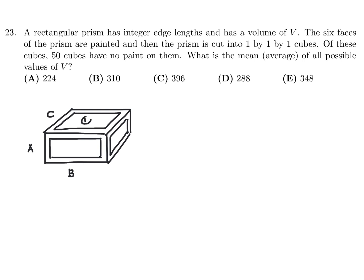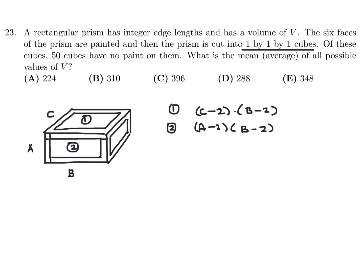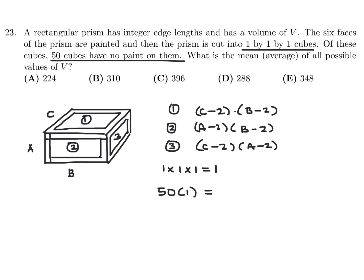So that dimension would be C minus 2. Region 1 would be C minus 2 times B minus 2. Region 2 would be A minus 2 times B minus 2, because you're subtracting one from each side. Region 3 would be C minus 2 times A minus 2. The total volume of the unpainted cubes is 50. Each cube has a volume of 1, so 50 cubes give volume of 50. Their dimensions would be A minus 2 times B minus 2 times C minus 2.